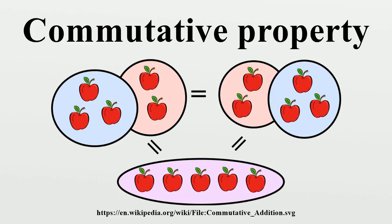The idea that simple operations, such as multiplication and addition of numbers, are commutative was for many years implicitly assumed, and the property was not named until the 19th century when mathematics started to become formalized. The commutative property is a property generally associated with binary operations and functions. If the commutative property holds for a pair of elements under a certain binary operation, then the two elements are said to commute under that operation.